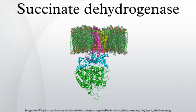In step 6 of the citric acid cycle, SQR catalyzes the oxidation of succinate to fumarate with the reduction of ubiquinone to ubiquinol. This occurs in the inner mitochondrial membrane by coupling the two reactions together.